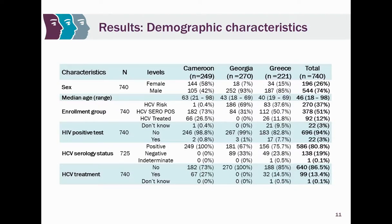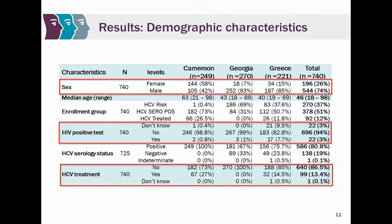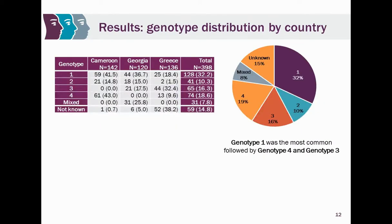Looking at demographics: in all countries, most participants were male, except in Cameroon where 58% of participants were women. The number of people with HIV co-infection was rather low at 3%. The number of people exposed to treatment was only 13%, with approximately 100 participants having been exposed to DAAs. Genotype distribution varied across countries; overall, genotype 1 was most common, followed by genotypes 4 and 3. As part of this study, we evaluated the sensitivity of DBS to detect all genotypes, confirming that all genotypes were detected.